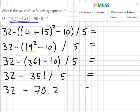And so our final answer is 32 minus 70.2, which equals minus 38.2.